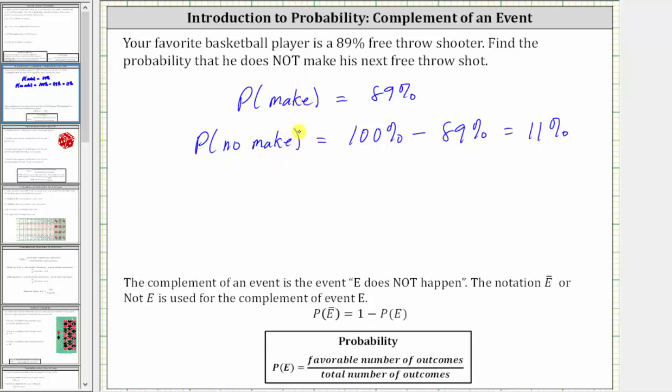If we take a look at our notes below, the complement of an event is the event E does not happen. And we use a notation E with a bar over it, or not E, to indicate the complement of an event. And the probability of the complement of E is equal to one minus the probability of E.